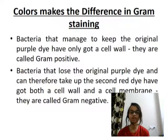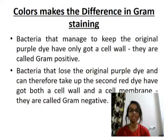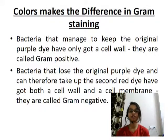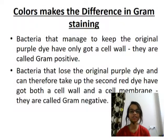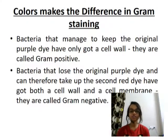Bacteria that manage to keep the original purple dye have only a cell wall and are called Gram positive. Bacteria that lose the original purple dye and take up the second red dye have both a cell wall and a cell membrane — they are called Gram negative. So Gram positive bacteria retain the purple dye, while Gram negative bacteria take up the red dye.